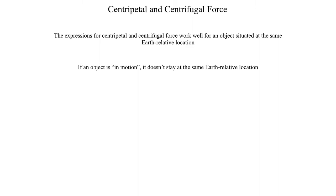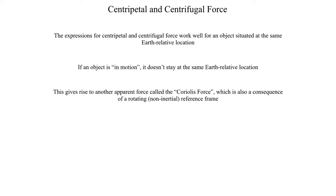However, if an object is in motion — if you were to get up and start walking around — then you would be changing your earth-relative location; in other words, you would be changing either your latitude, your longitude, or if you were to jump straight into the air, your height above the ground. When an object is in motion relative to a rotating reference frame, since the earth is a rotating non-inertial reference frame, we have to start accounting for the Coriolis force.